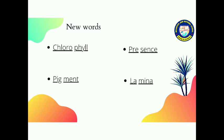First word is chlorophyll. C-H-L-O-R-O-P-H-Y-L-L, chlorophyll. Chlorophyll is a pigment that is present in leaves. Due to this, leaves color green.